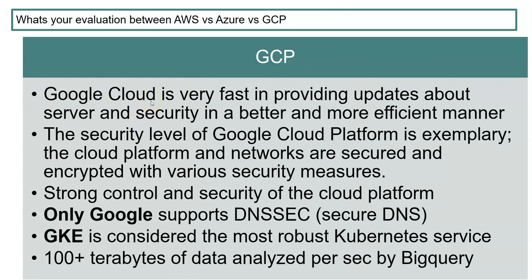Google Cloud is very fast in providing server and security updates in a more efficient manner. Google brings its internal learnings into cloud as a service, which really helps a lot. Google maintains billions of containers internally and Kubernetes originated from Google, so they are very experienced in that area. Definitely GCP can provide better security for that reason as well.